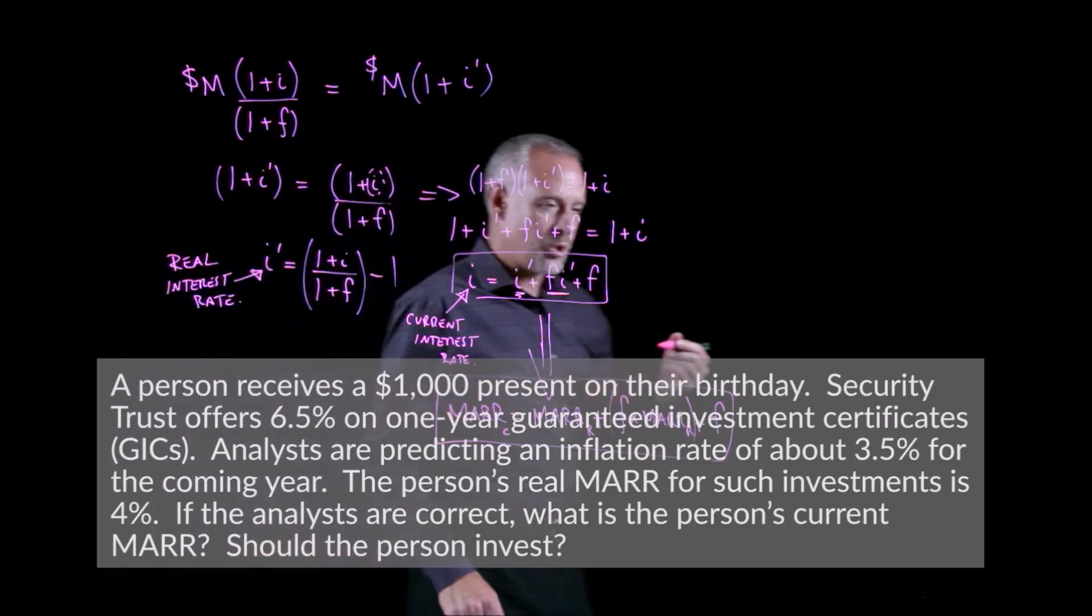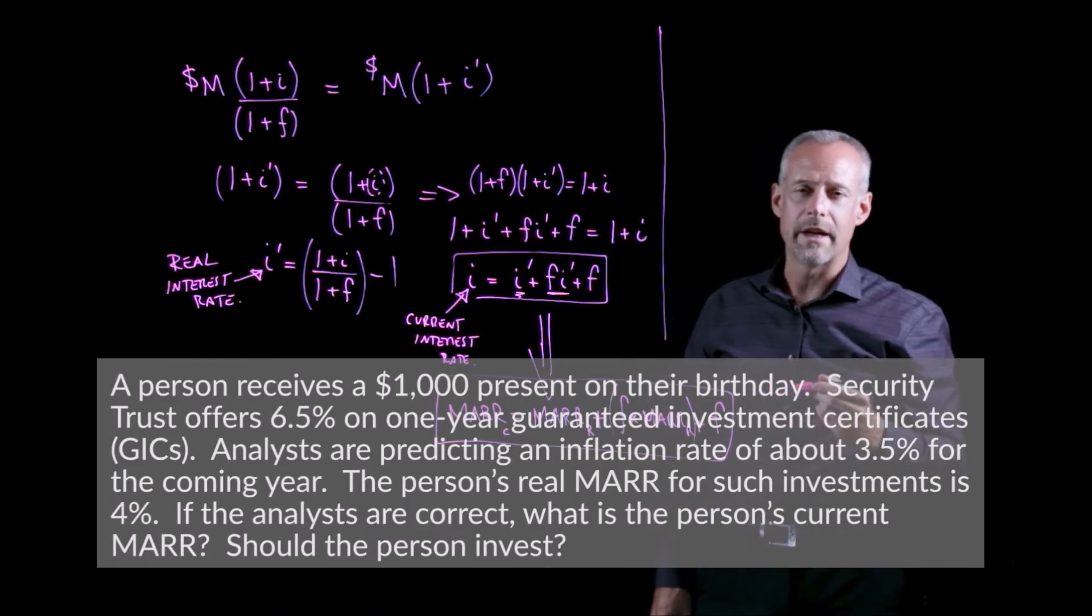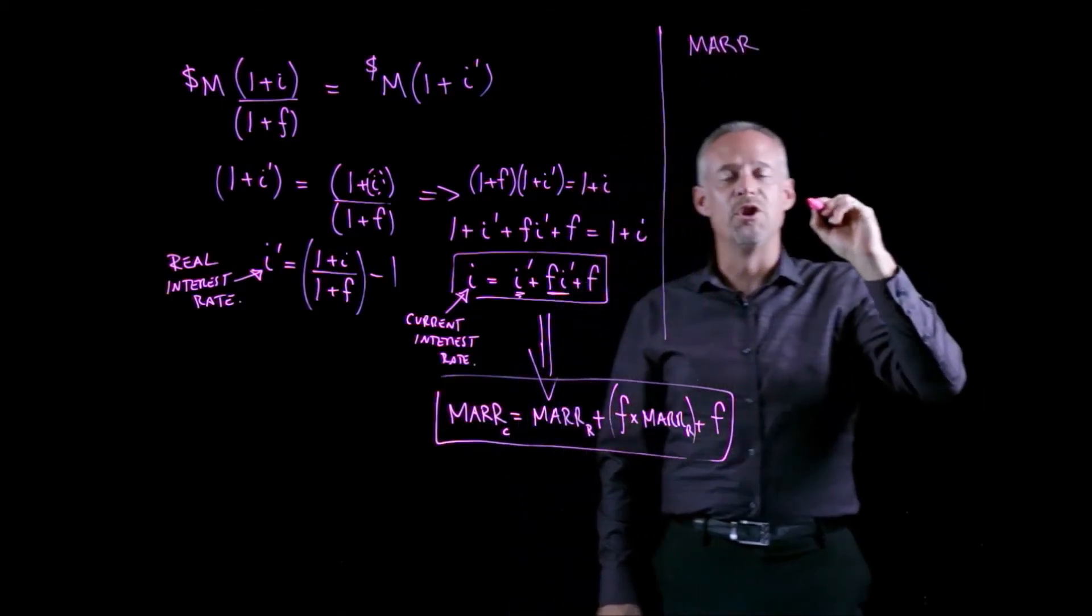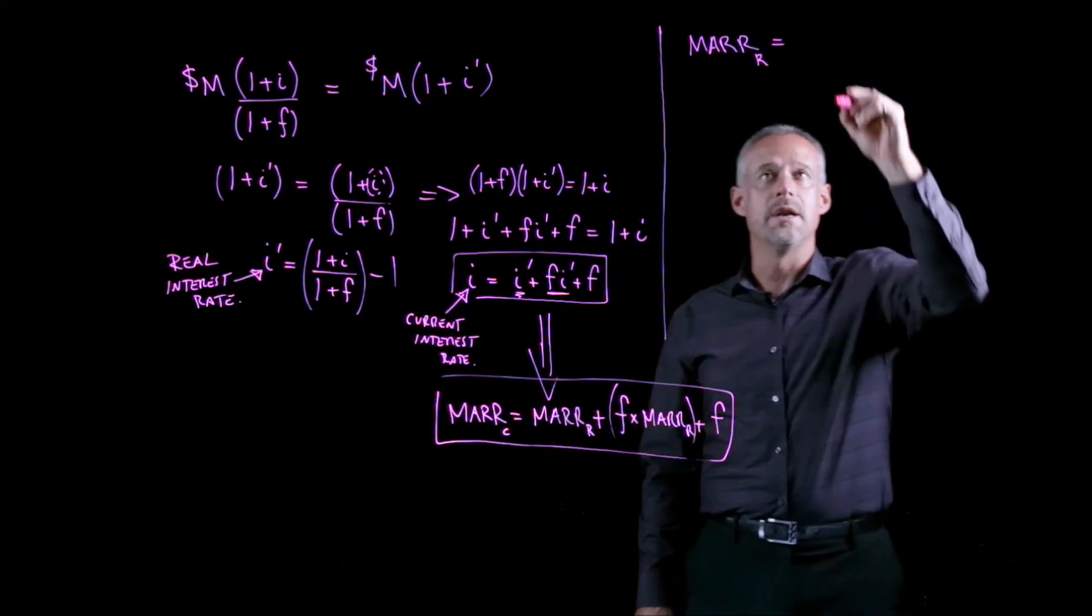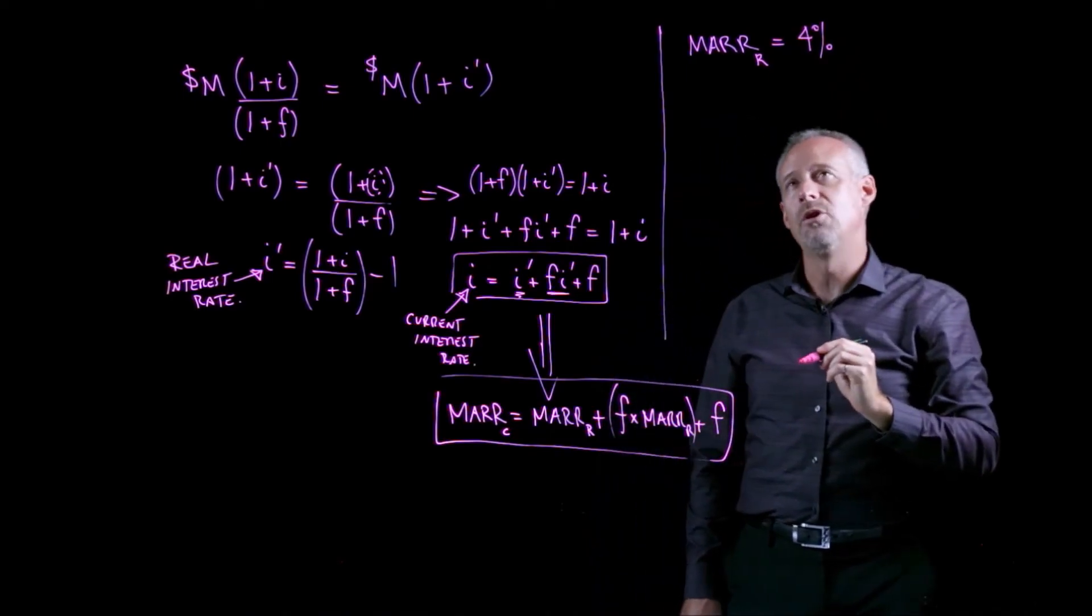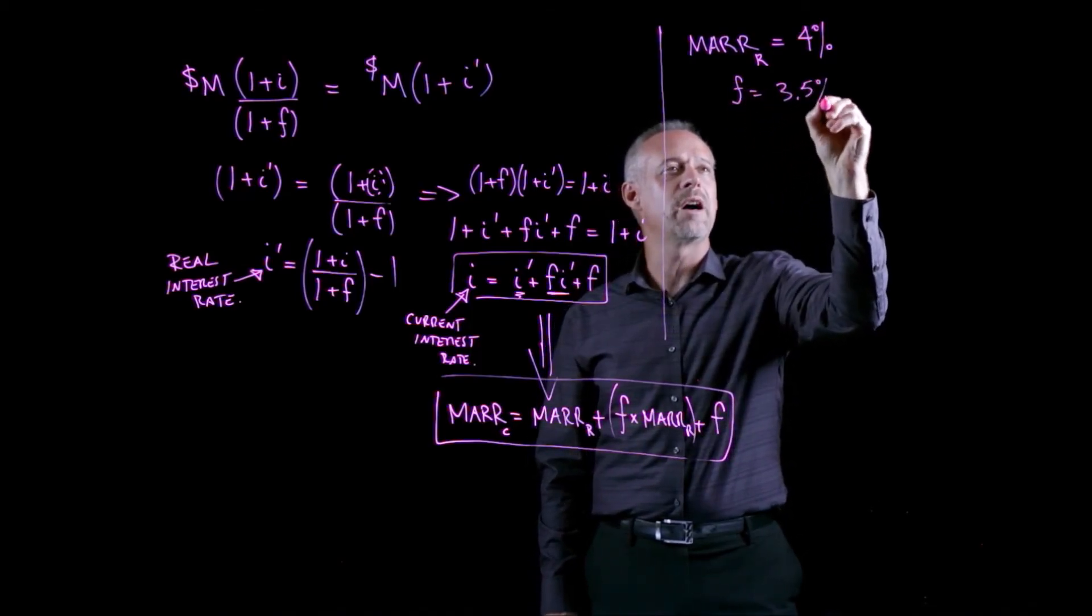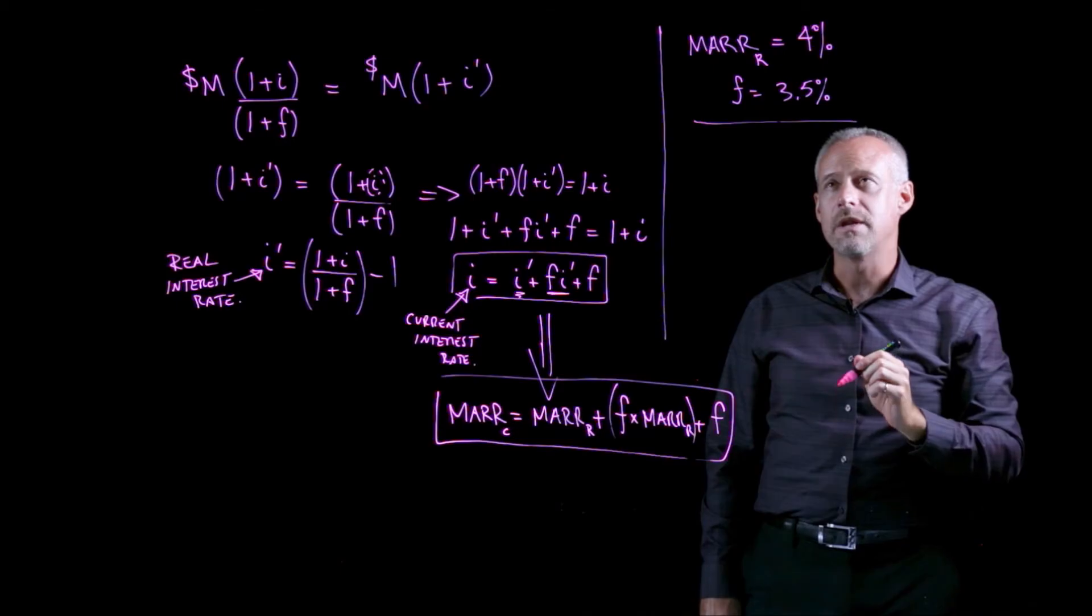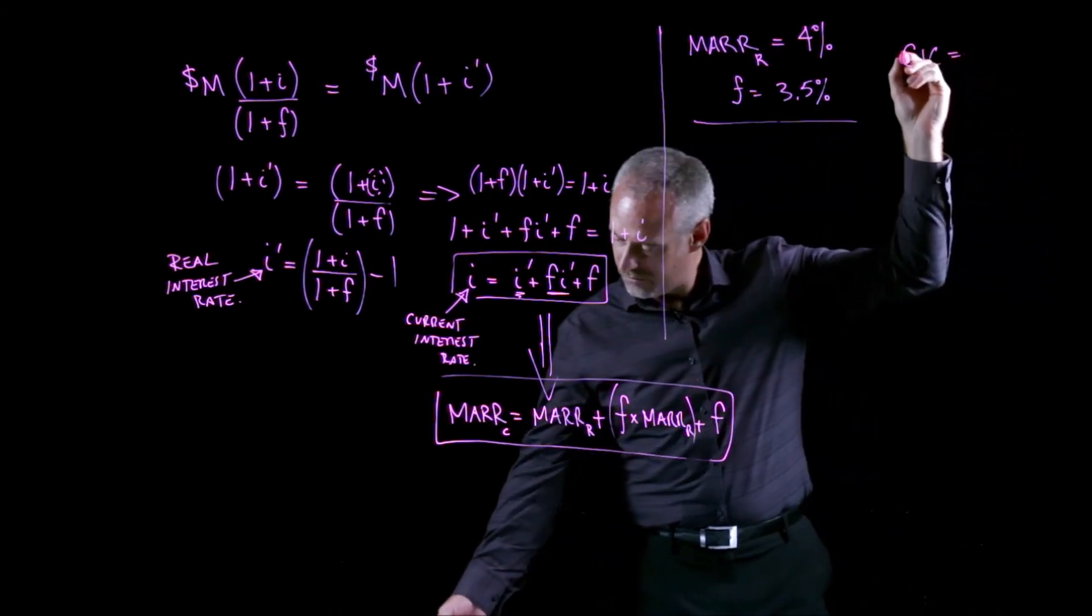So, in this problem, we're told of a person who is trying to decide whether or not they should undertake a particular investment. And this person has $1,000. We're told that this person's real MARR, that is, the amount of return that they would really like to get on their investments, taking into account inflation, is 4%. So, if we have a real MARR of 4%, and we're also told in the problem that inflation is expected to be 3.5%, the question becomes, should this person invest in a guaranteed investment certificate that's advertising a rate of return of 6.5%?